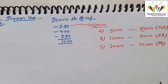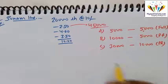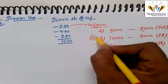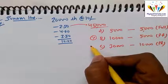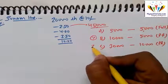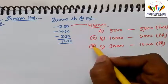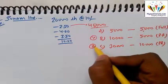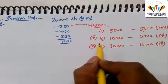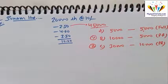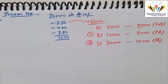All shareholders paid the amounts due on allotment and call, except Y — allotted 400 shares under List B — and Z — allotted 200 shares under List C. Both Y and Z paid only the application money and did not pay subsequent amounts.